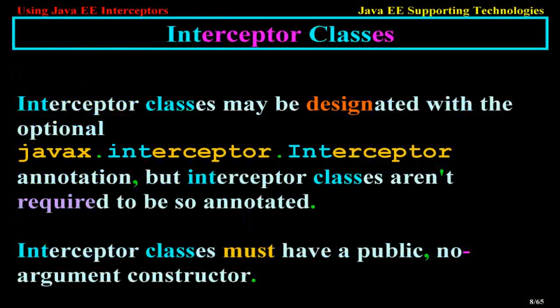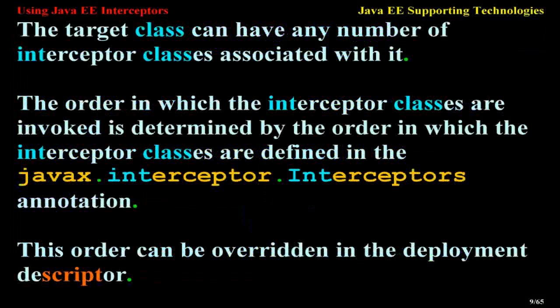Interceptor classes may be designated with the optional javax.interceptor.Interceptor annotation, but interceptor classes are not required to be so annotated. Interceptor classes must have a public, no-argument constructor. The target class can have any number of interceptor classes associated with it. The order in which the interceptor classes are invoked is determined by the order in which they are defined in the javax.interceptor.Interceptors annotation. This order can be overridden in the deployment descriptor.